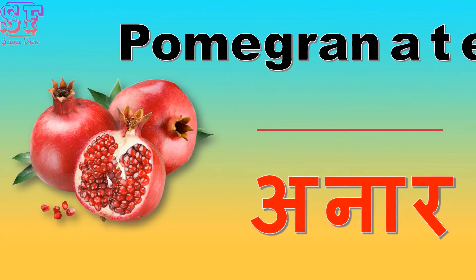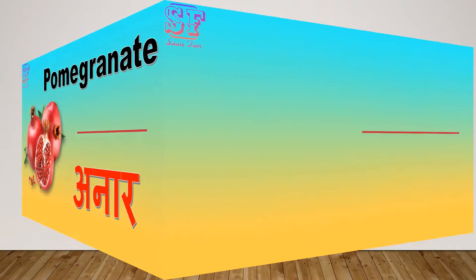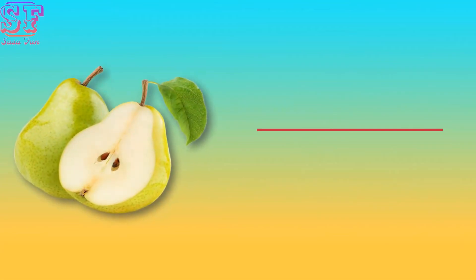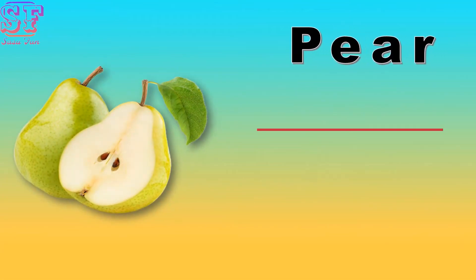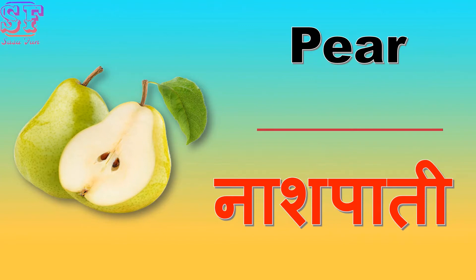Pomegranate — pomegranate means Anar. Pear — pear means Nashpati.